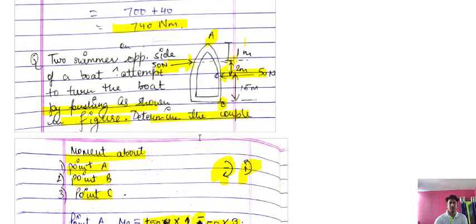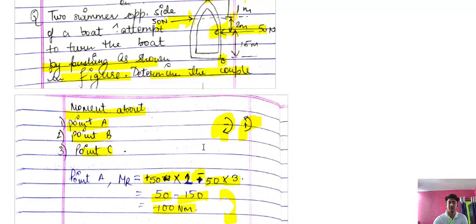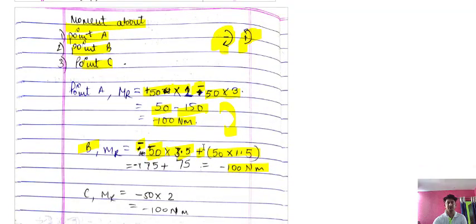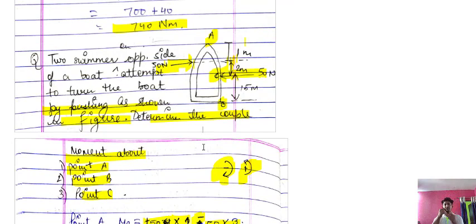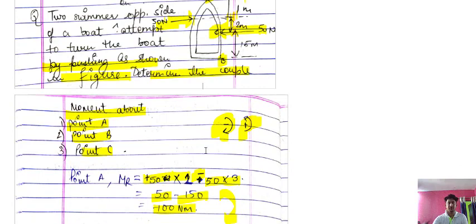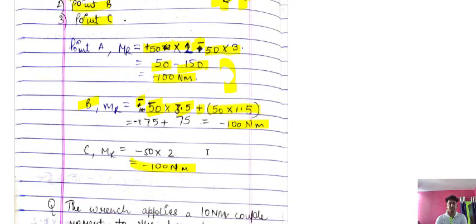For point C, which is the point where the 50 Newton force is applied: the perpendicular distance for that force at C is zero, so its moment is zero. Only the other 50 Newton force contributes: 50 into 2 meters (clockwise, negative) = minus 100 Newton meter.